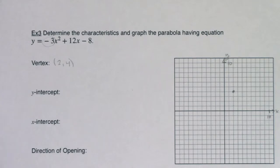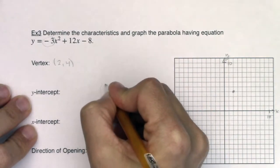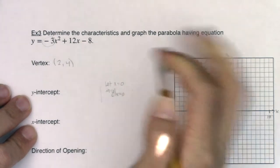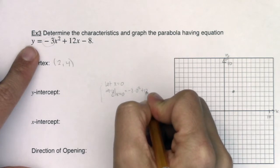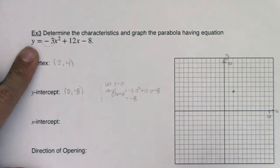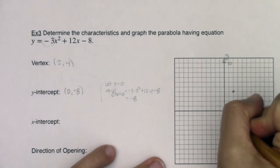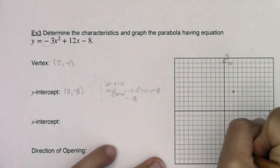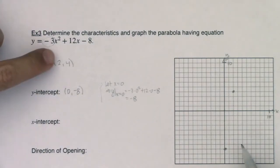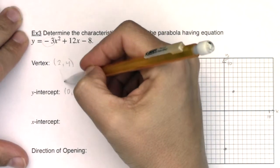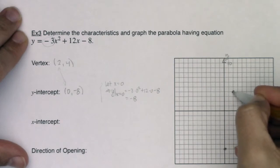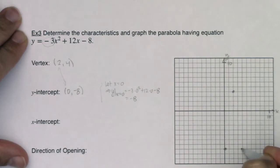The next thing I'm being asked to find is the y-intercept. Anytime you want to find a y-intercept, you let x equal 0. Y evaluated at x equaling 0 would be negative 3 times 0 squared plus 12 times 0 minus 8, which equals negative 8. So the y-intercept is the ordered pair (0, negative 8). The x-coordinate of the vertex is 2 and this y-intercept is at x equals 0 — a distance of 2 units. Moving 2 units to the right of the vertex, by symmetry, there's a corresponding point also at negative 8.